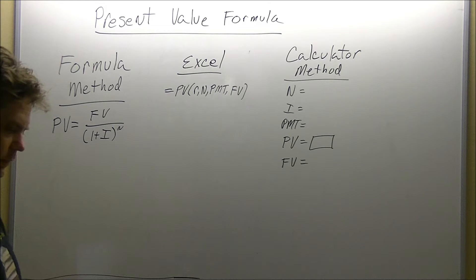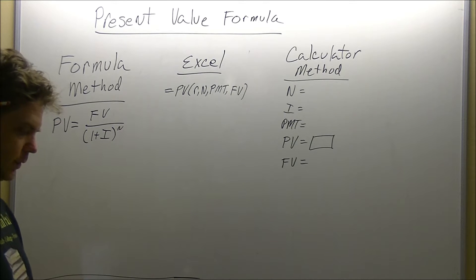The problem we are going to be working on is a person will receive a $5,000 payment in two years. If the current discount rate is 6%, compounded yearly, what is the present value?